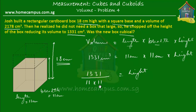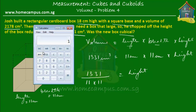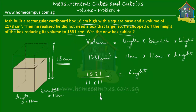So: 1331 divided by 11, divided by 11 again — using the calculator — gives us 11 centimeters. The new height of the box is 11 centimeters. Since the length, breadth, and height are all equal to 11 centimeters, the new box is a cube — it is a cubical box.